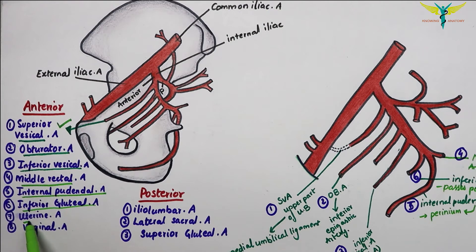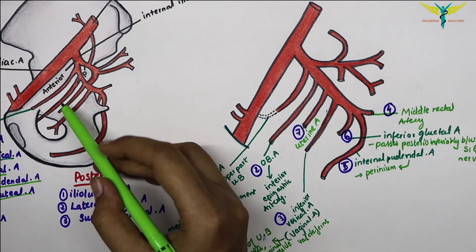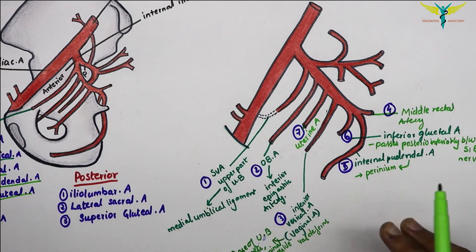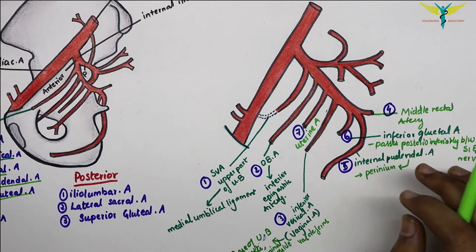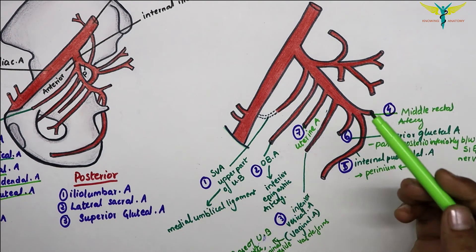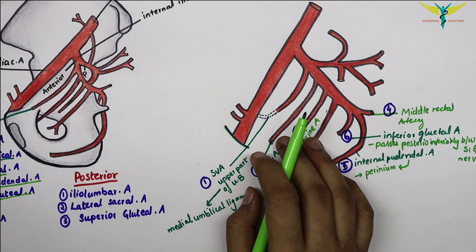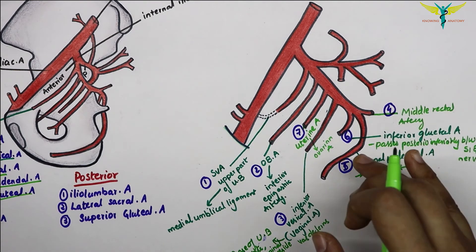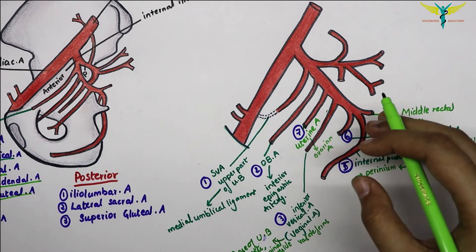The seventh branch is the uterine artery. It runs medially along the floor of the pelvis along the root of the broad ligament and crosses the ureter superiorly to reach the lateral fornix of the vagina. It then ascends along the lateral margin of the uterus and runs along the uterine tube to terminate by anastomosing with the ovarian artery. Remember: the uterine artery crosses the ureter superiorly.